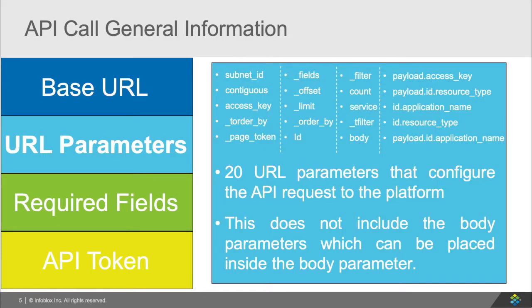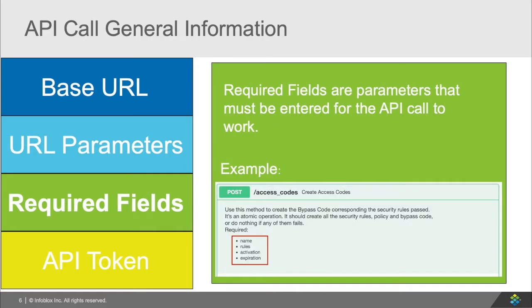For URL parameters, we currently have 20 different parameters to help configure the REST API call. This allows you to change the way that the request is set so that you can add, modify, or remove specific information. Now these URL parameters do not include the body parameters which can be placed inside the body URL parameter. The cloud platform REST API calls may also have some required fields for each call and will be found on the documentation in the required section.